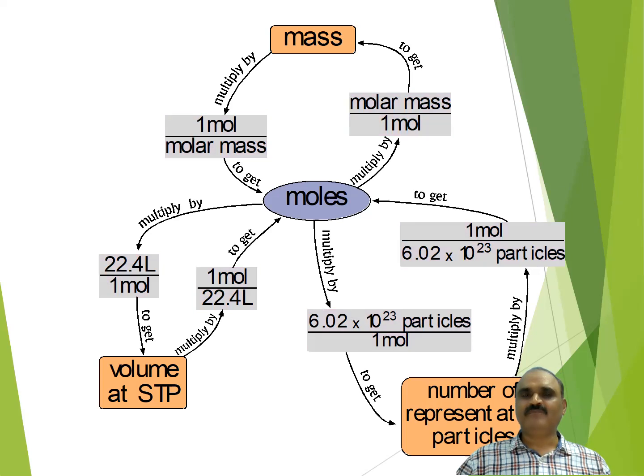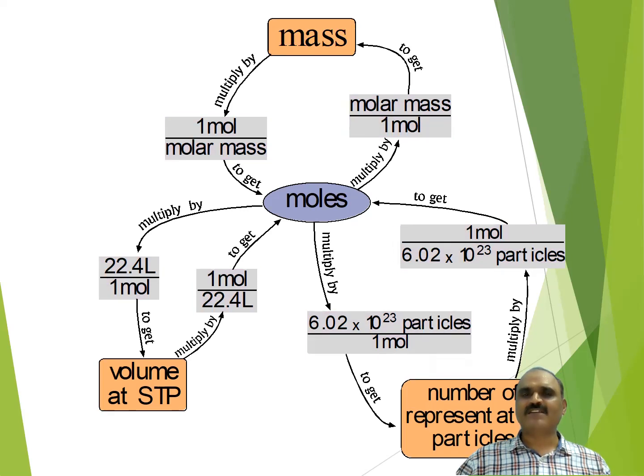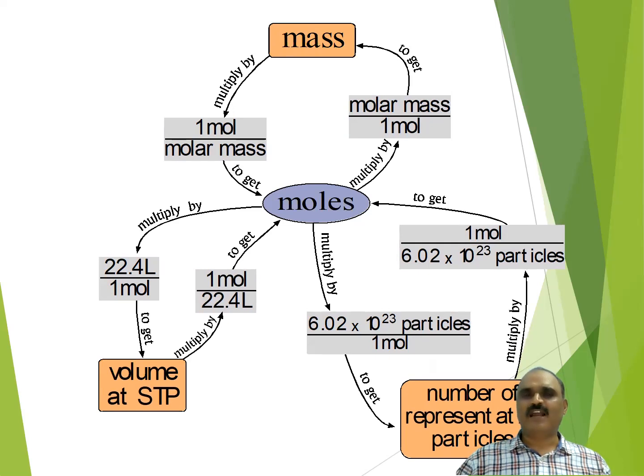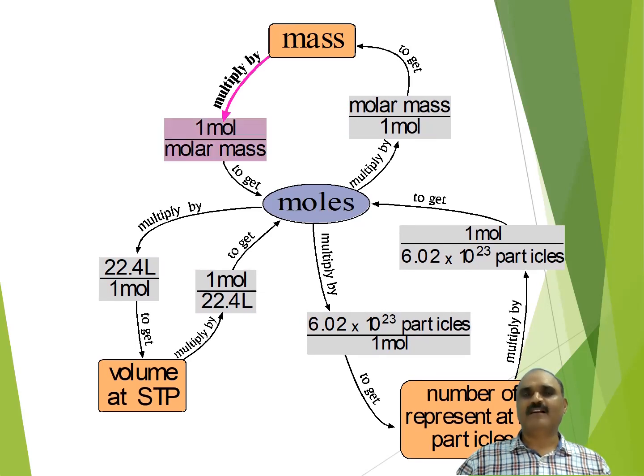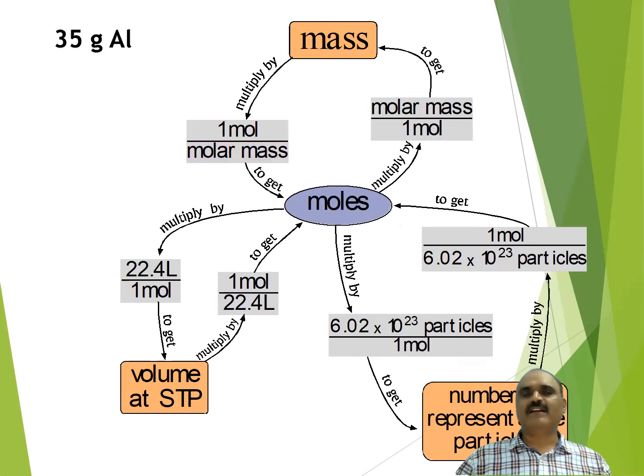For example, I have to convert mass into moles. What is the route? I will multiply by one mole upon molar mass. Let us take an example. Example is that I have 35 gram aluminium. A numerical is there that how many moles are there in 35 gram aluminium. Or you can say find number of moles in 35 gram aluminium. What to do? We have 35 grams. 35 grams is mass. And we want to convert it into mole. What we shall do?